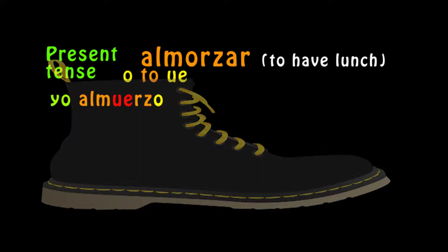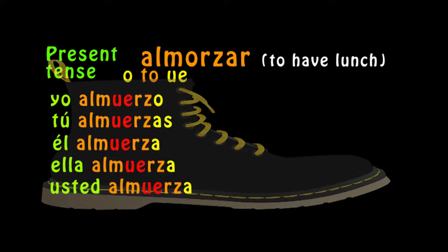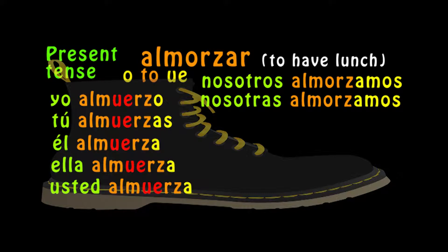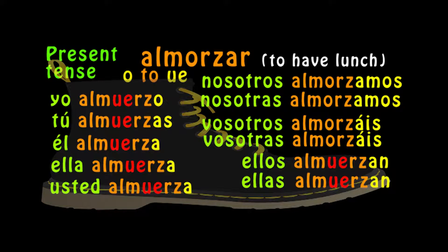Yo almuerzo. Tú almuerzas. Él almuerza. Ella almuerza. Usted almuerza. Nosotros almorzamos. Nosotras almorzamos. Vosotros almorzáis. Vosotras almorzáis. Ellos almuerzan. Ellas almuerzan. Ustedes almuerzan. Now remember, if you are going to Spain, then you need to pronounce the Z as in Z. Now let's do the preterite.